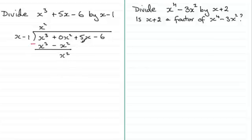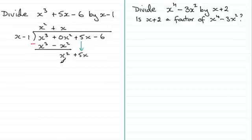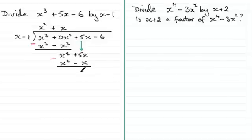We bring down the next term, which is 5x, so we put plus 5x on the end. What do we multiply x by to get x squared? That's going to be plus x. x times x minus 1 gives us x squared minus x. Subtracting: x squared minus x squared is 0, and 5x minus minus x is going to be 6x.